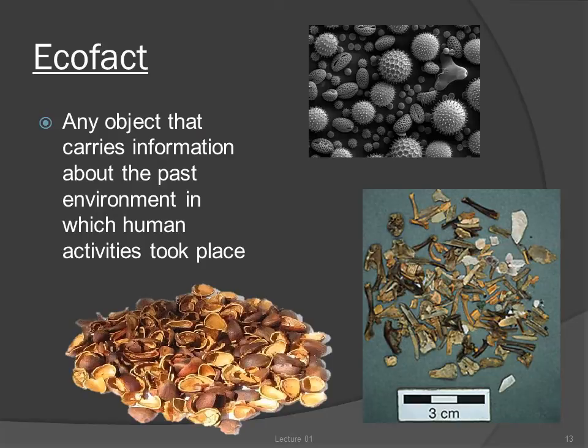The third type of archaeological data is an ecofact. An artifact is made or used by a human; an ecofact is neither made nor directly used, but nevertheless carries evidence about human behaviors. Ecofacts tell us about the environment in which humans lived, and include plant seeds, animal bones, pollen, and soils.